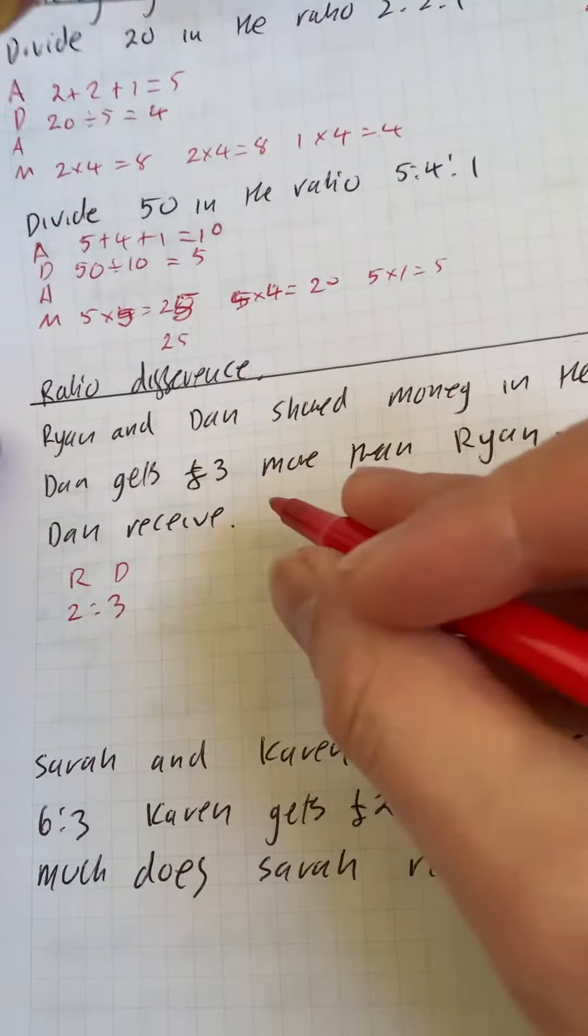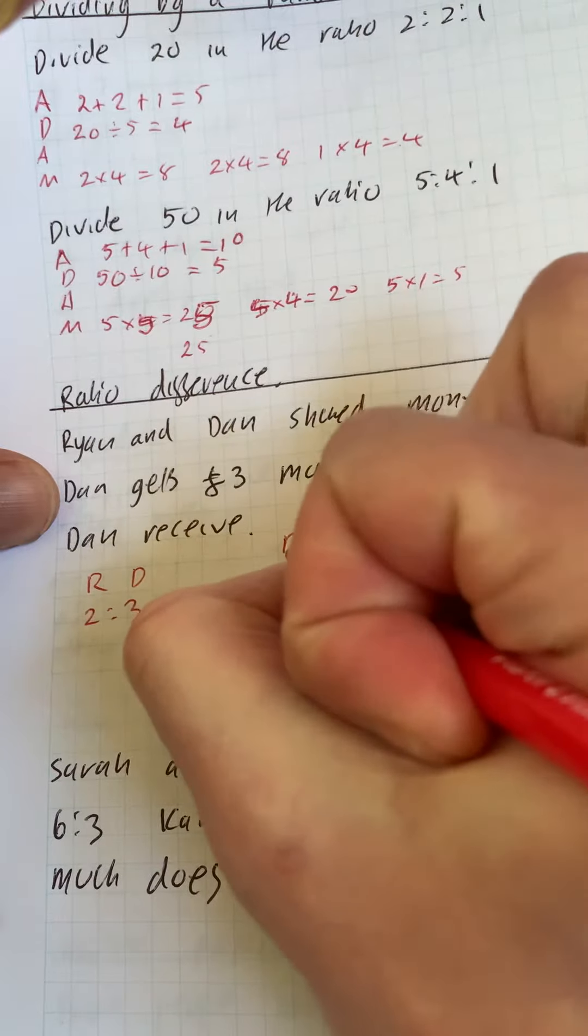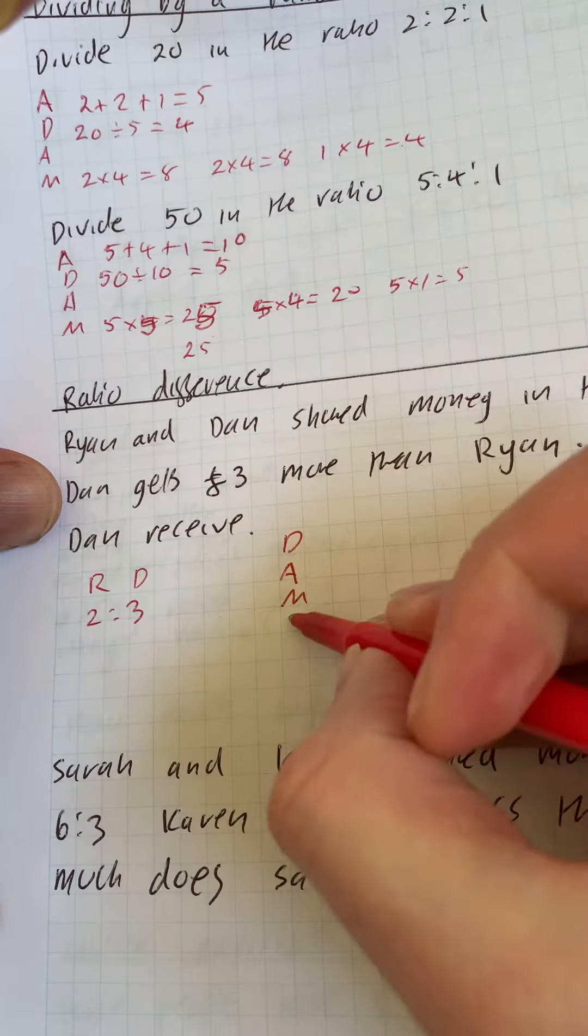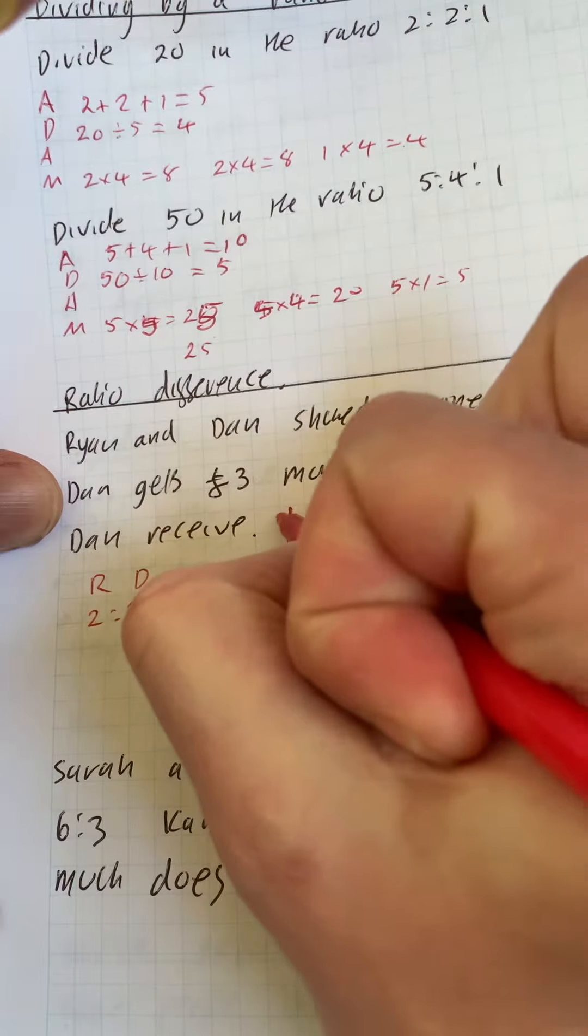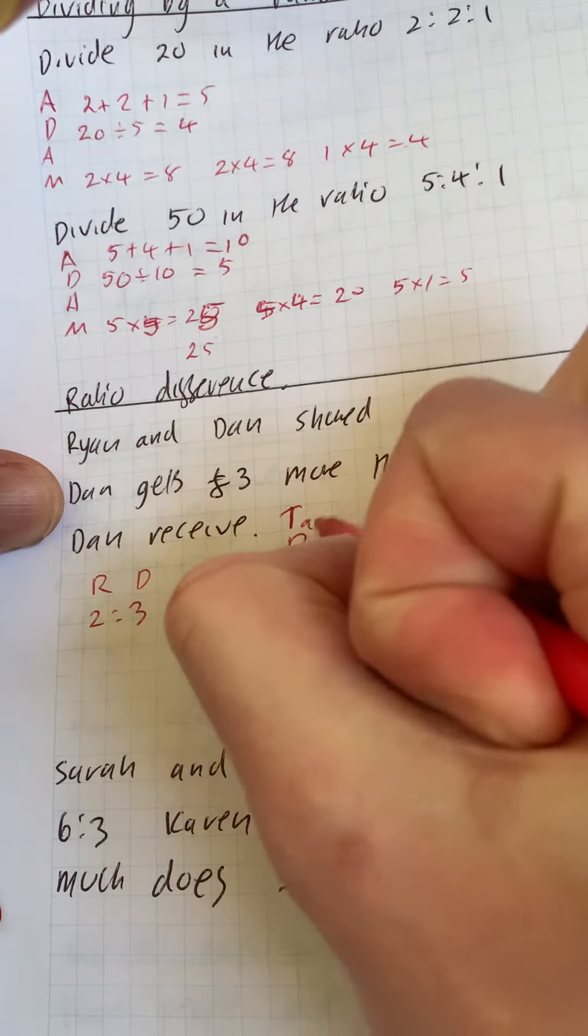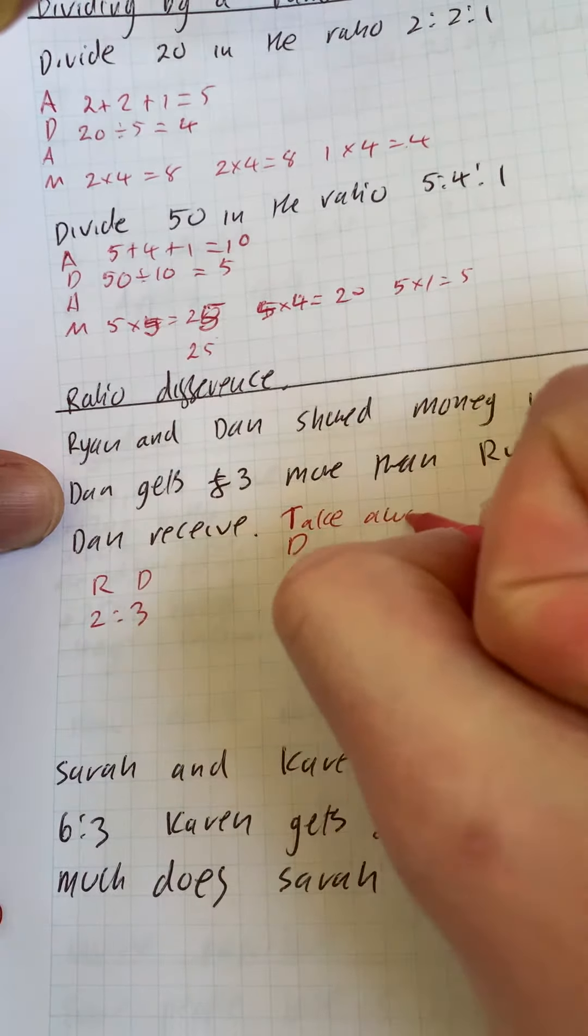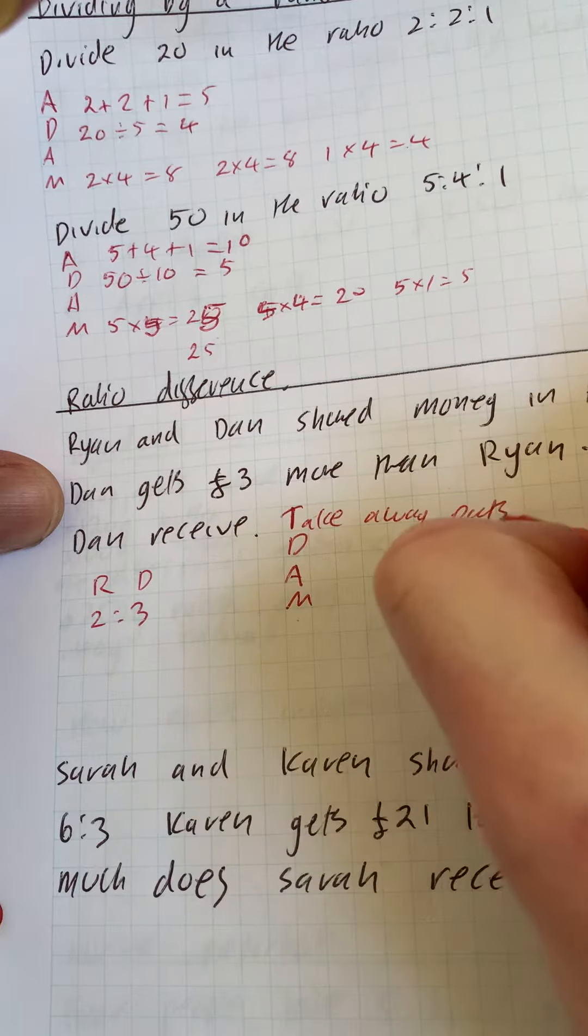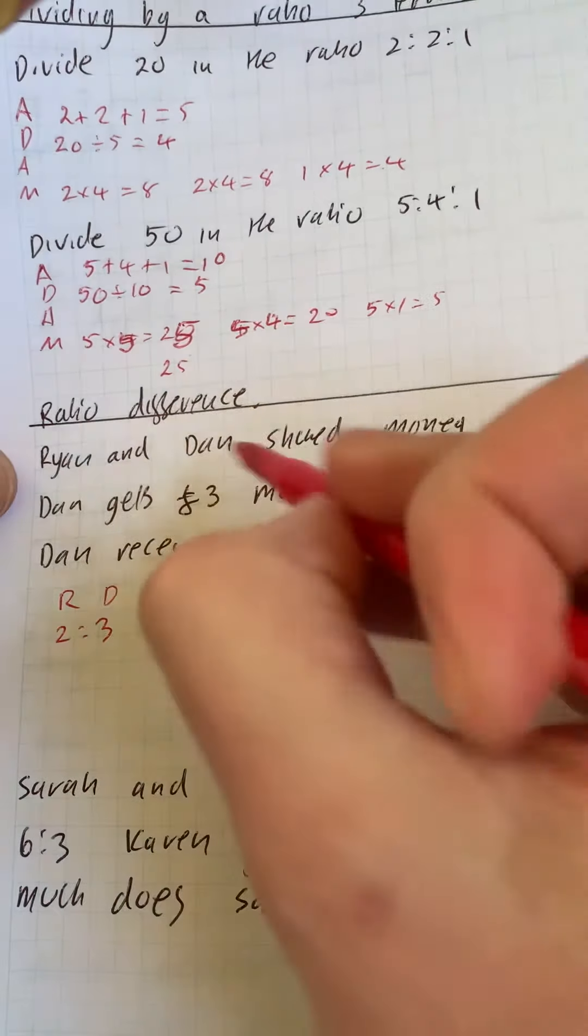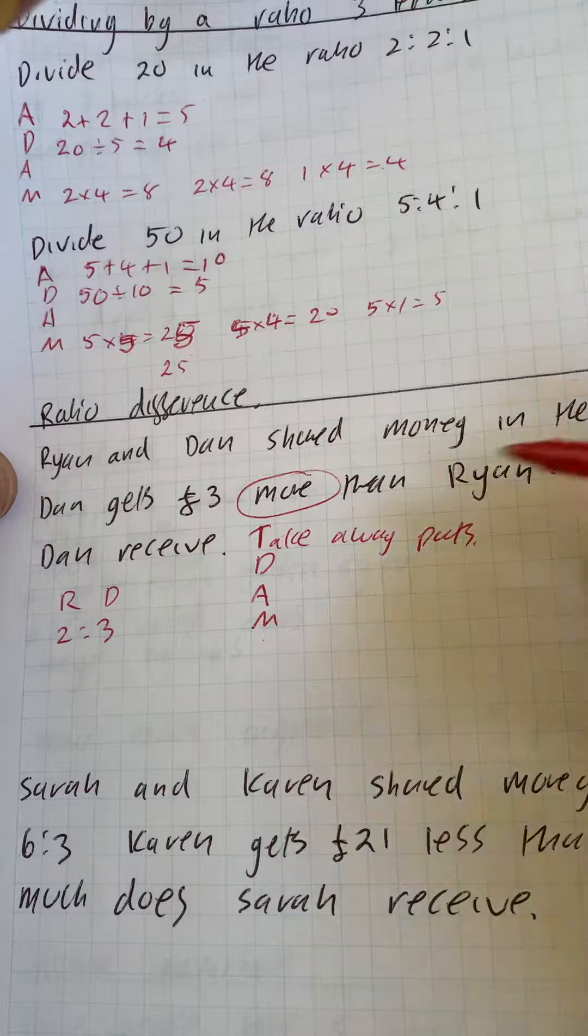Now this is very similar to ADAM. So D, A, M is exactly the same as ADAM, but instead of adding, we're taking away. So we take away parts because there's a difference. So as soon as you see a question with more or less, you take away the parts.